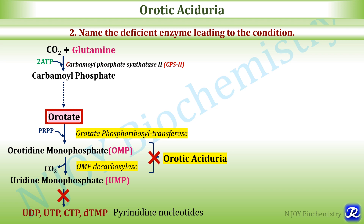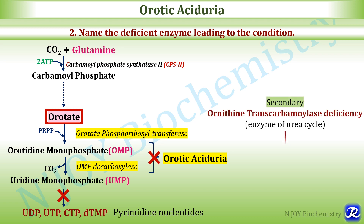If there is a defect in either or both enzymes — orotate phosphoribosyltransferase or OMP decarboxylase — the condition is called orotic aciduria, because OMP and UMP cannot be converted to various pyrimidine nucleotides. There will be increased accumulation of orotate, which is excreted in the urine. Orotic aciduria can also be due to a secondary cause — specifically, deficiency of ornithine transcarbamylase, which is the enzyme of the urea cycle.